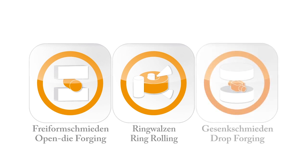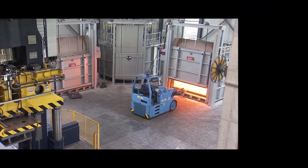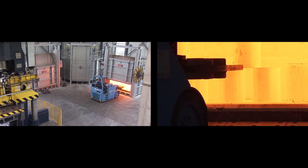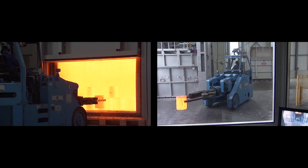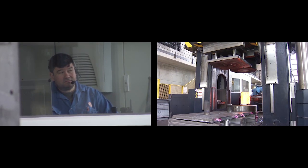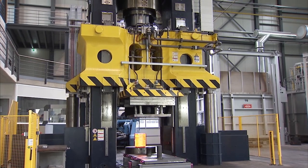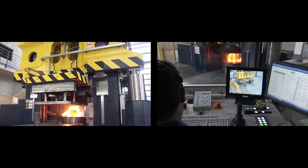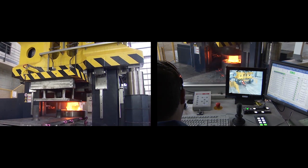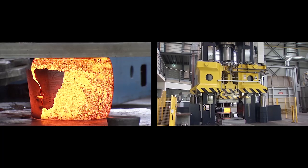Imbach is the only plant in Switzerland that can offer free-form forging, ring rolling, die forging, and complete machining under one roof. This enables unique solutions. Free-form forging is suitable for economical production of high-quality single pieces and small series. Despite low setup costs, versatile shaping is possible with the use of auxiliary tools.